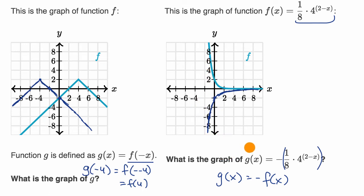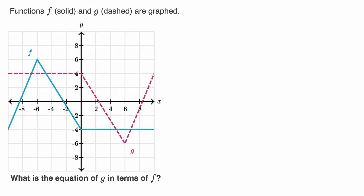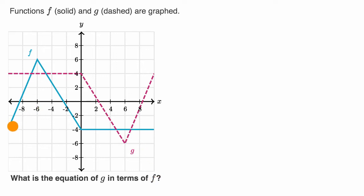On Khan Academy, you'd pick the choice that would look like that. Let's do another example. Here we're told functions f, in solid blue, and g, dashed, are graphed. What is the equation of g in terms of f? So pause this video and try to think about it. The key is to realize how do we transform f of x, labeled right over here, in order to get g.